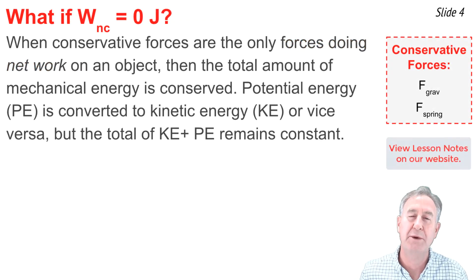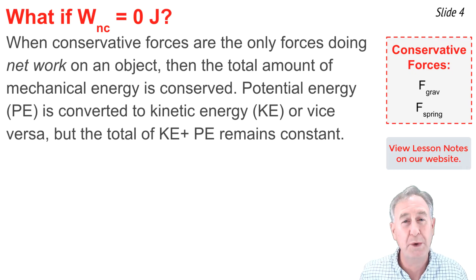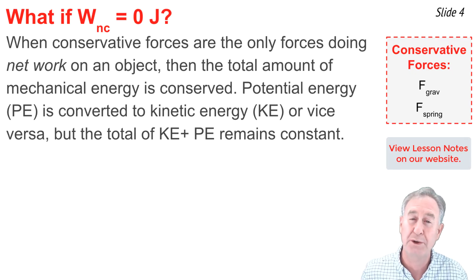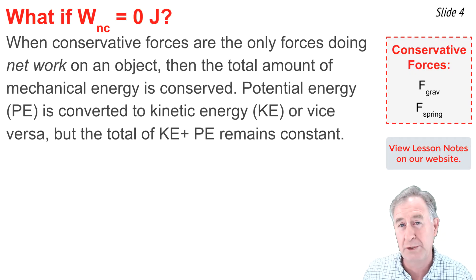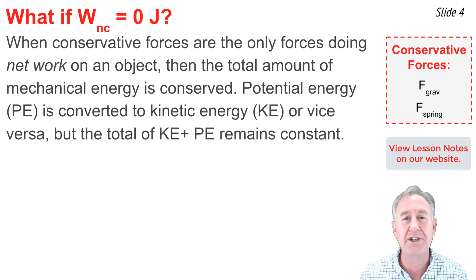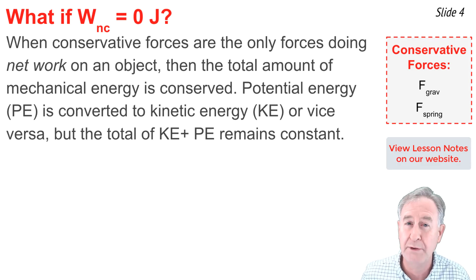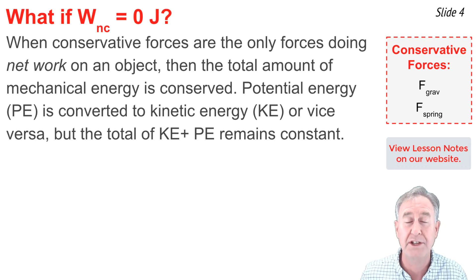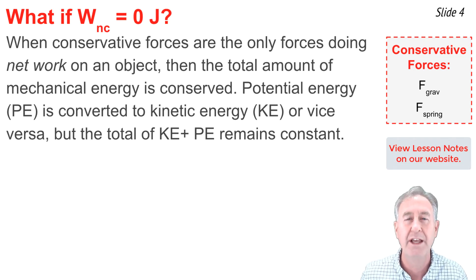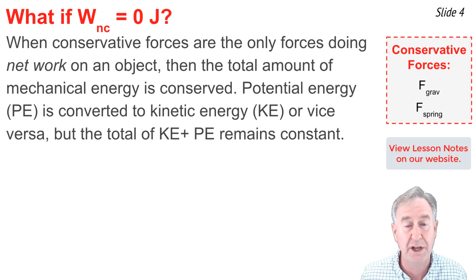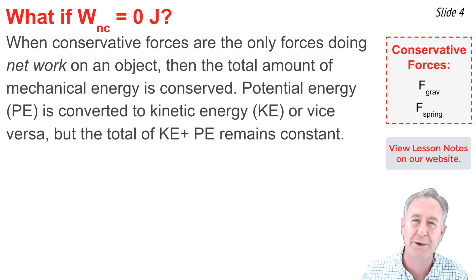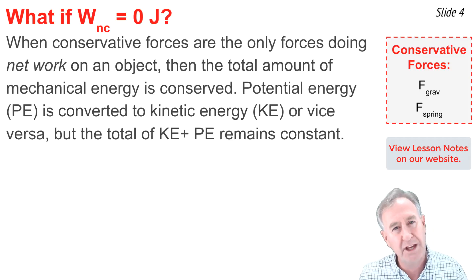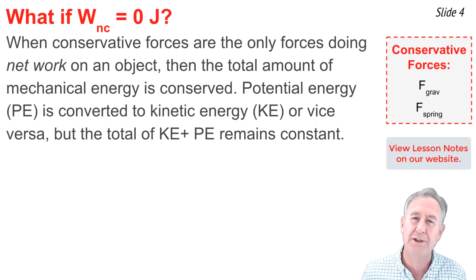In this video, I'll be discussing what happens when the work done by non-conservative external forces is zero joules. When conservative forces, such as the force of gravity or the spring force, are the only forces doing net work upon the system, then the total mechanical energy of the system is conserved. Potential energy can be converted to kinetic energy, or vice versa, but the sum of these two forms of energy remains constant.